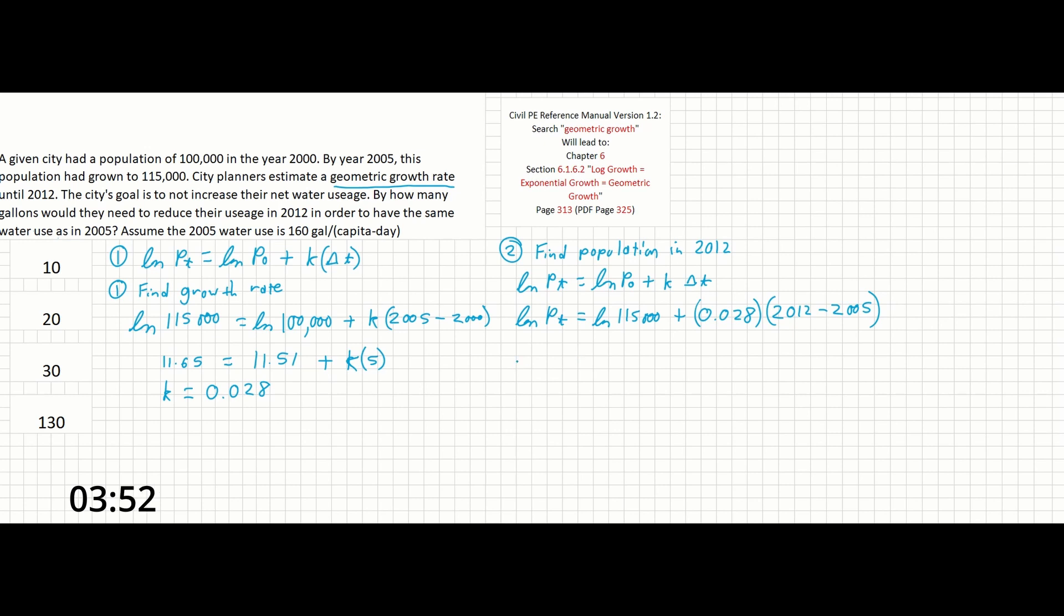And if we calculate this out, ln of p sub t equals 11.65, we could just use the same number from over here if we want, and not calculate it again, plus 0.2 is what I'm going to estimate that number out to be. So ln of p sub t equals just about 11.85.